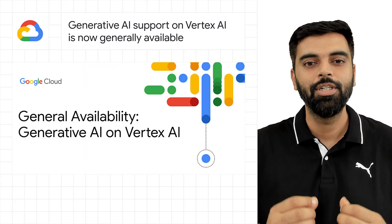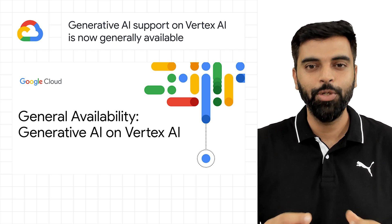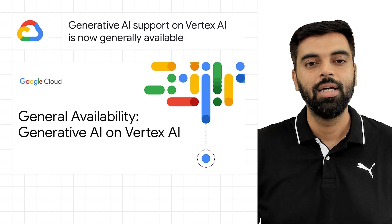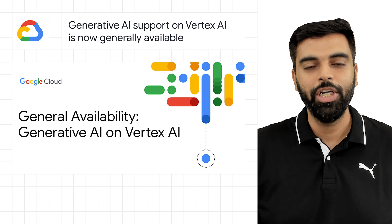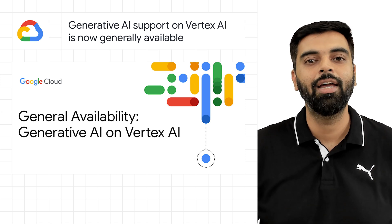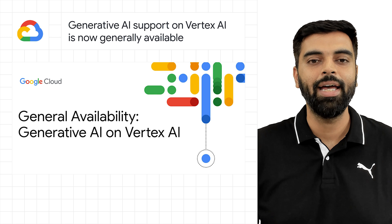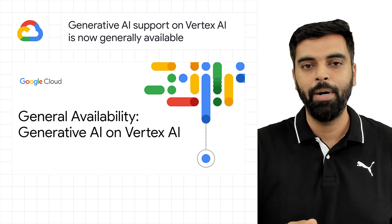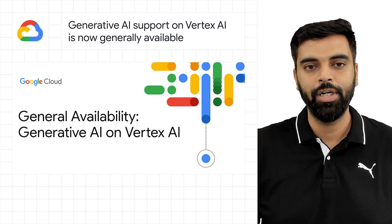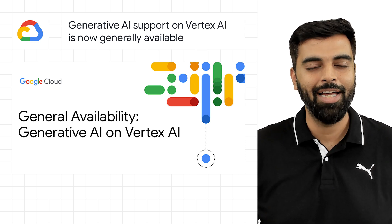At Google Cloud, we are committed to making generative AI useful for everyone. Doing so requires more than making powerful foundation models available to businesses, governments, and developers. We are excited to announce the general availability of generative AI support on Vertex AI, giving customers access to our latest platform capabilities for building and powering custom generative AI applications. With this update, developers can access our text model powered by PaLM 2, embedding APIs for text, and other foundation models in Generative AI Studio for model tuning and deployment.